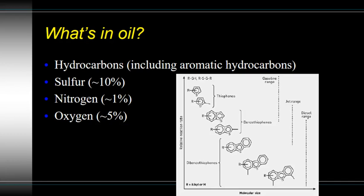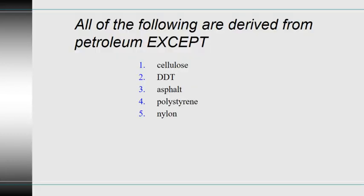There's also diesel fuel, aviation fuel, and all kinds of other products. The products themselves range from very small chains or rings — really light liquids — all the way to really thick, pasty liquids like Vaseline and even waxes like paraffin wax, which is actually a petroleum product. So your first question: of the following, which is NOT derived from petroleum? The choices are cellulose, DDT, asphalt, polystyrene, and nylon.